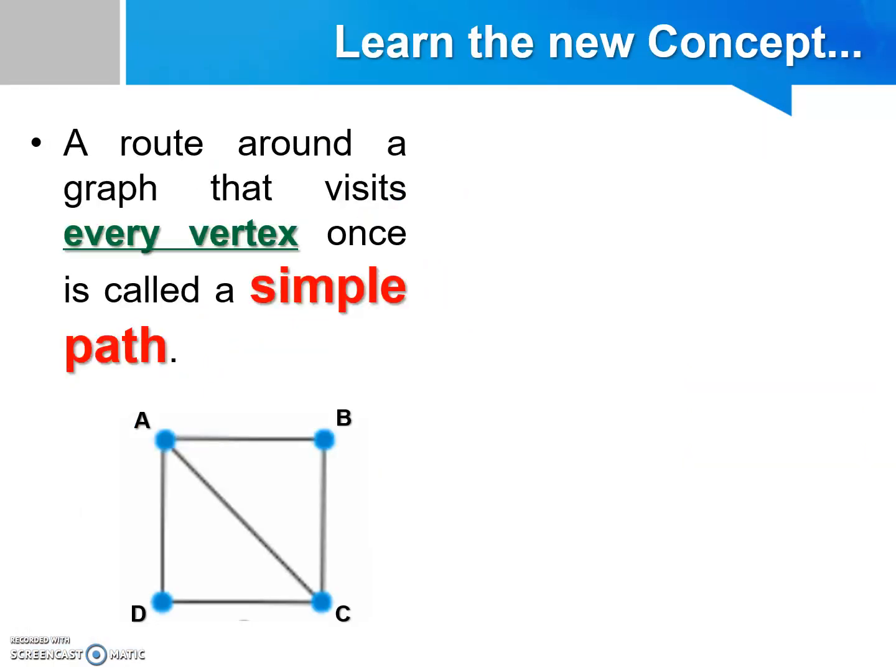Besides that, a route around a graph that visits every vertex once is called a simple path. As we can see here, if the path is like that, from A to B and from B to C, then from C to D, next from D to A, this is called a simple path.